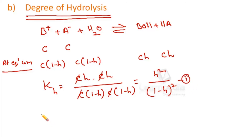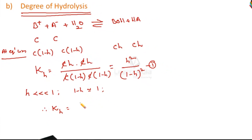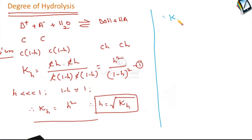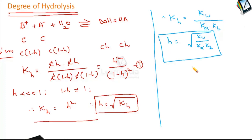If the degree of hydrolysis H is much less than 1, then (1−H) is taken as 1. Therefore KH simplifies to H², and H equals the square root of KH. So the degree of hydrolysis H for a salt of weak acid and weak base is the square root of the hydrolysis constant. Since KH = KW / (KA × KB), we can also write H = √(KW / (KA × KB)). This is the relation to calculate the degree of hydrolysis — we need KW, KA, and KB.